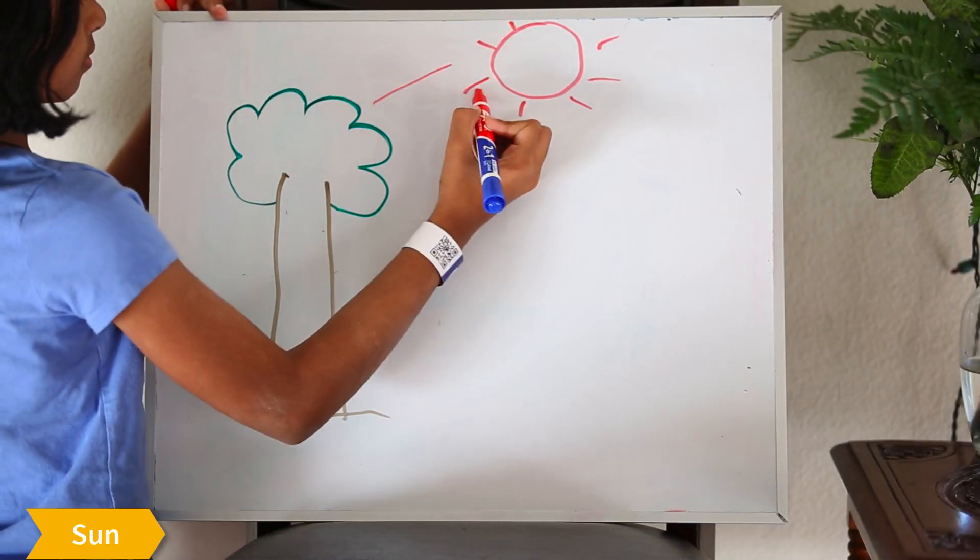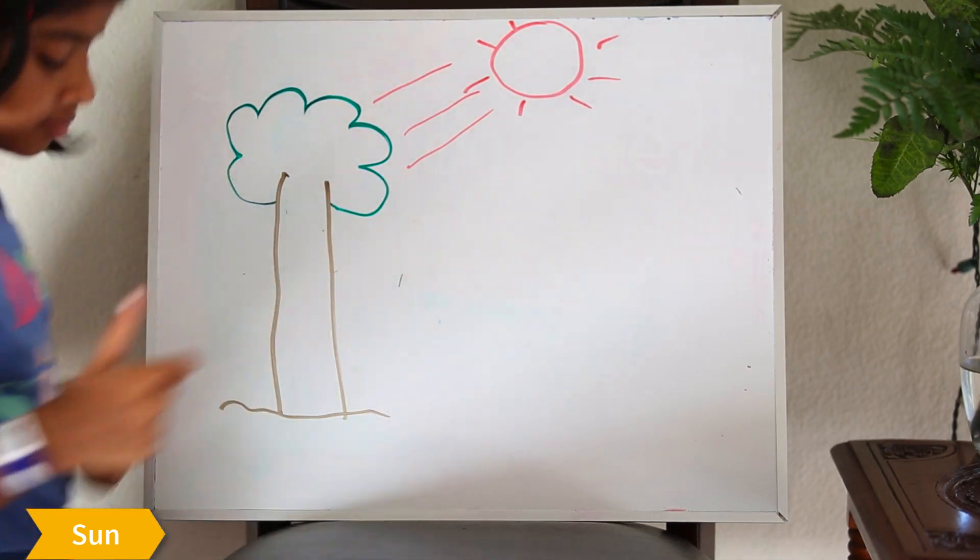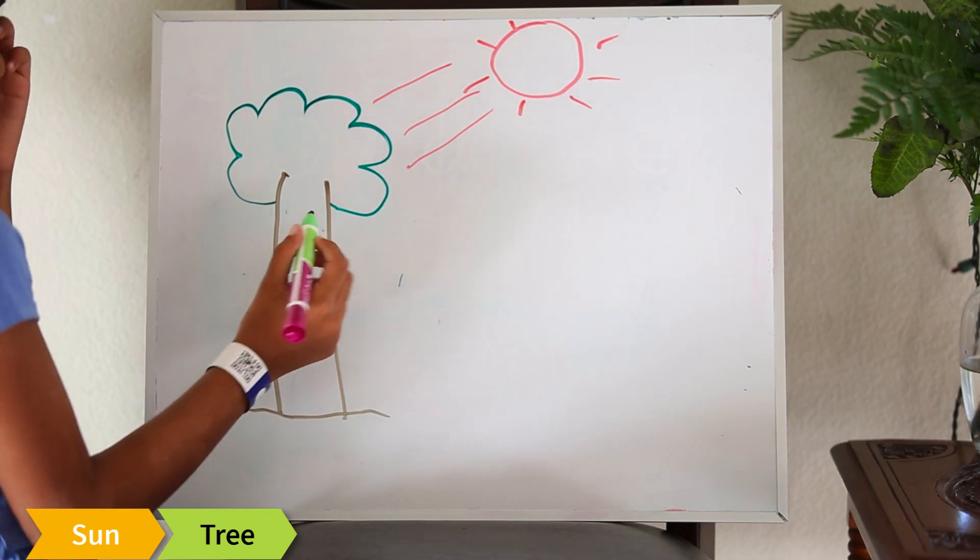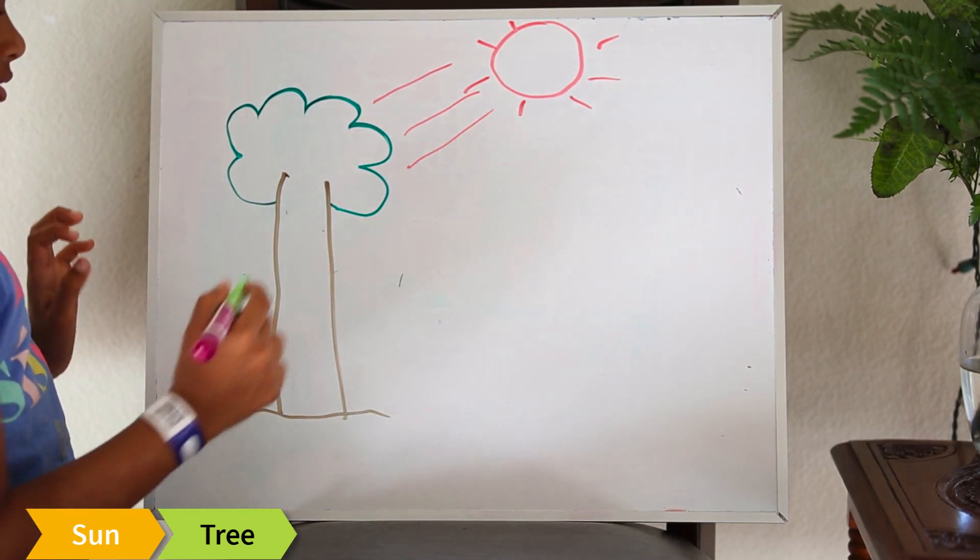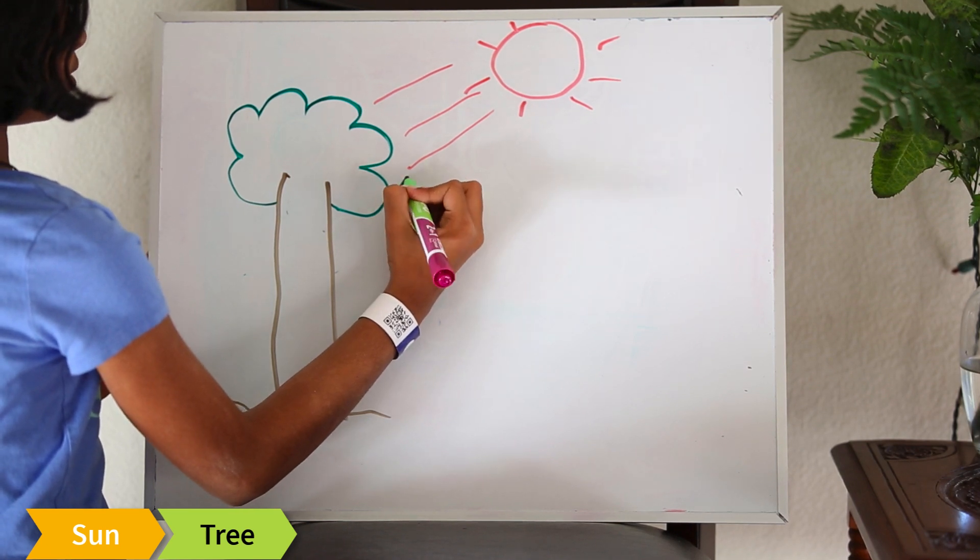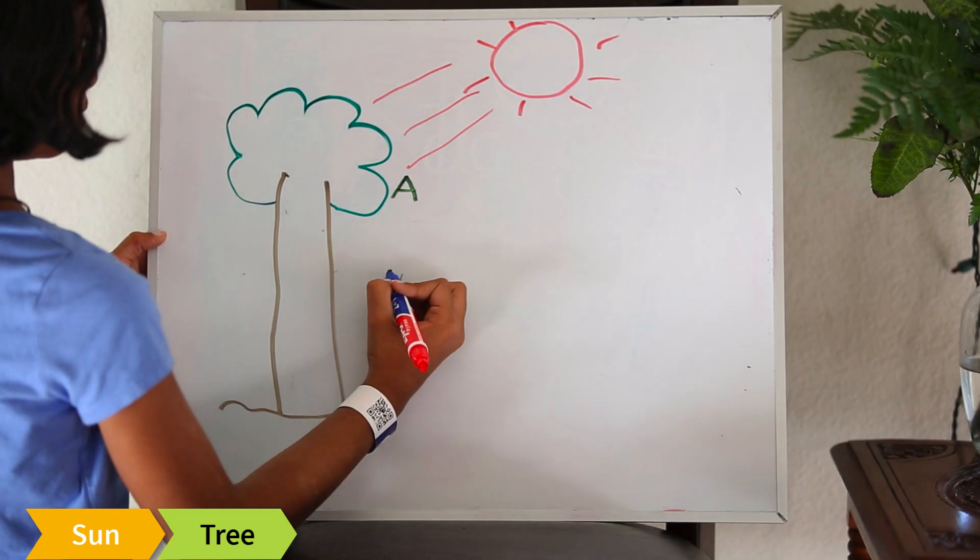So first, there's the sun. The sun shines on everything around you. For example, a tree. The sun's rays shine on the tree. So there is point A and point B.